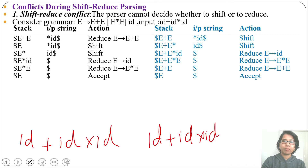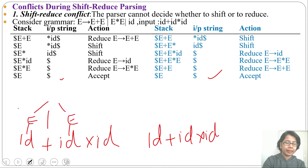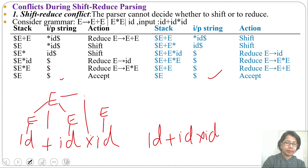Let's construct the bottom of the parse tree according to these two parsers. According to the first parser: id is reduced to E, here id is reduced to E, then E plus E reduces to E, then multiplication id is reduced to E, then E multiplication E is reduced to E. So here we first do the addition operation, then we do the multiplication operation.